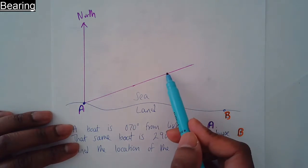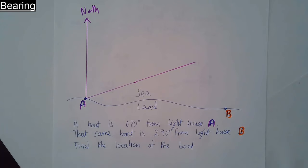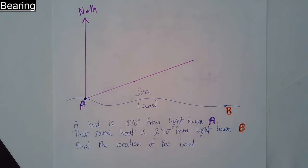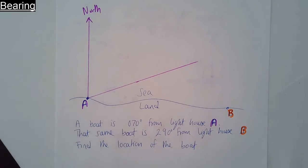That same boat is 290 degrees from lighthouse B. So what you do again is draw a north line.